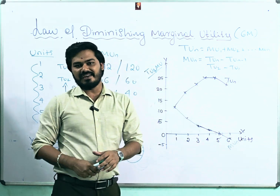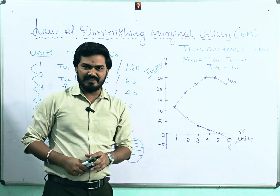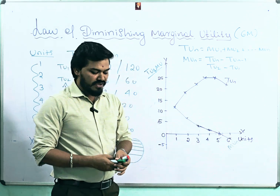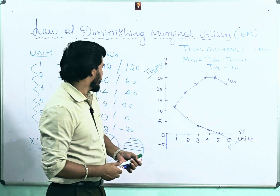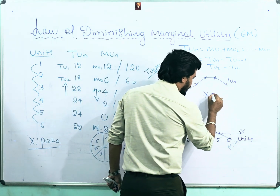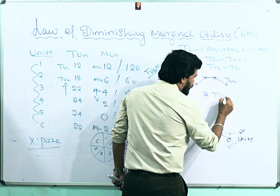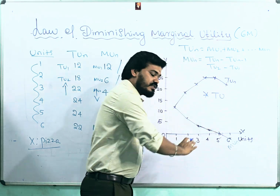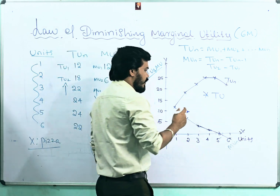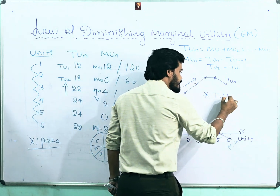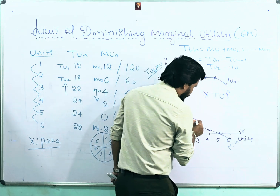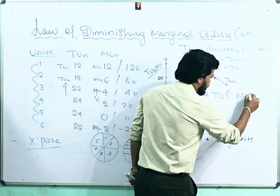There are three relations between total utility and marginal utility. First: as the consumption of units increases, total utility is increasing while at the same time marginal utility is decreasing.